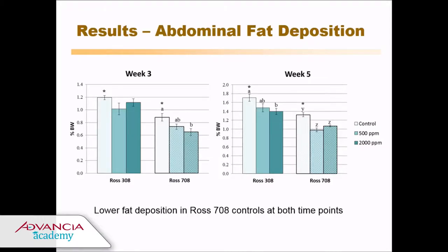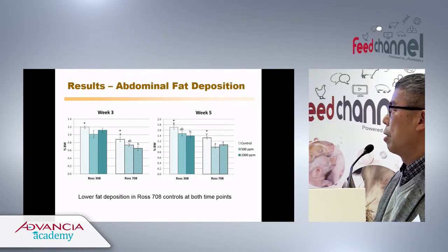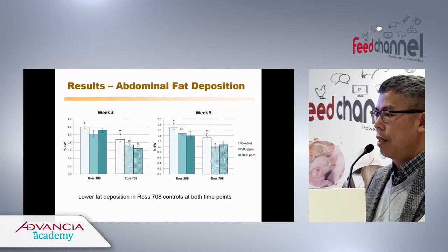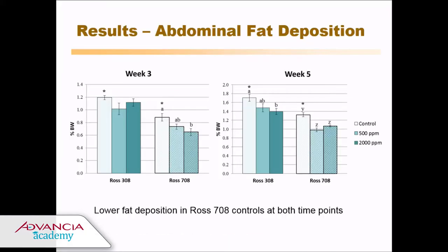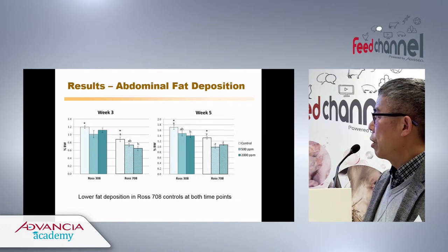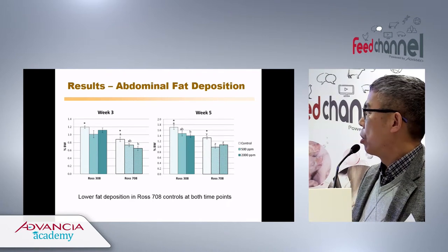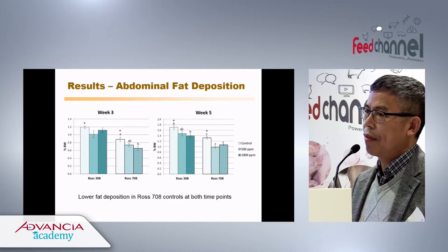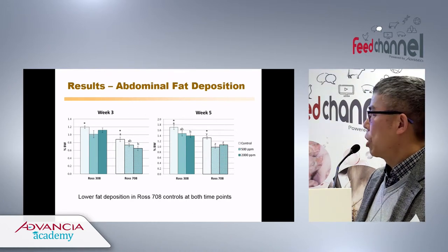Looking at the data from the animal trials — the open bars are the control groups without any butyrate addition. The response shown is abdominal fat relative to body weight. Even between the two strains there's a difference: Ross 308 had more abdominal fat and Ross 708 had less. At week five, the treatment groups with butyrate also showed differences, with Ross 308 treated groups showing significantly lower abdominal fat compared to controls, and similarly for Ross 708.